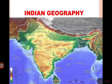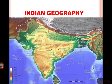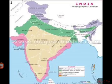We are going to talk about the Indo-Gangetic Brahmaputra Plains. The Indo-Gangetic Brahmaputra Plain is the largest alluvial tract in the world. The Northern Plains are formed by the deposition of alluvium brought by the rivers Indus, Ganga, and Brahmaputra along with their tributaries.